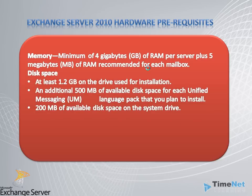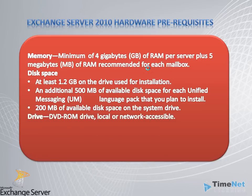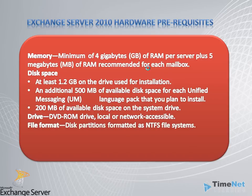You need at least 1.2 GB of drive space where you are going to install Exchange 2010, plus an additional 500 MB of available disk space for each Unified Messaging language pack you plan to install, and 200 MB of available disk space on the system drive — that is the C drive or wherever your operating system is installed. You also need a DVD-ROM drive, the file system must be NTFS, and a monitor with a minimum resolution of 800x600 pixels.